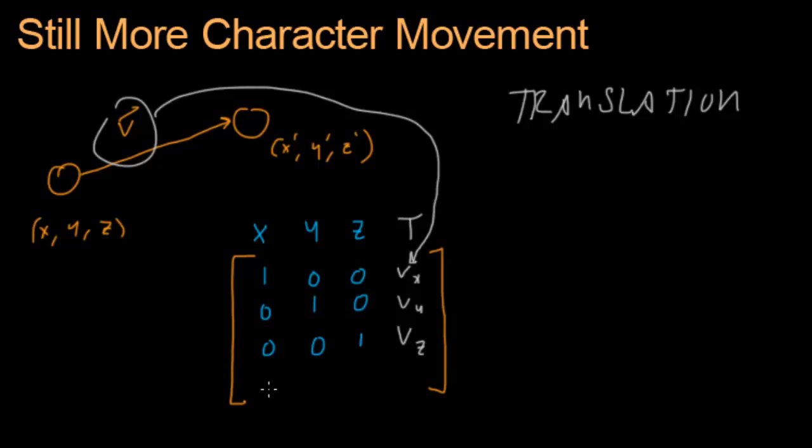And then this is going to be a 4x4 matrix. And for the very bottom row, we just fill in 0001. And now we have a translation matrix.